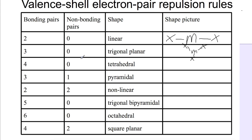For four bonding pairs with no non-bonding pairs, we get a tetrahedral, which you'll have seen when looking at something like methane — a carbon with four hydrogens. We tend to draw this with the 3D shape using a wedge and a dash, showing one H coming towards you and one going backwards. The bond angle here is around 109 degrees.